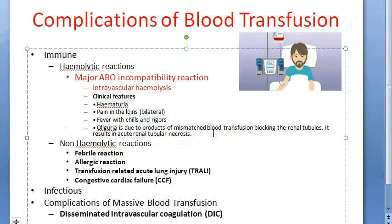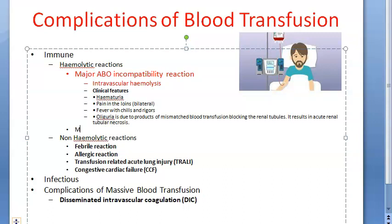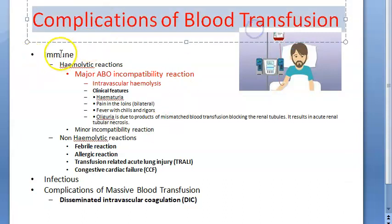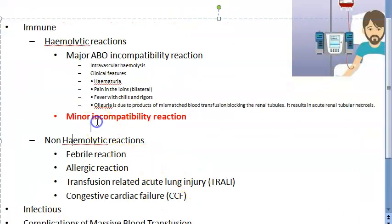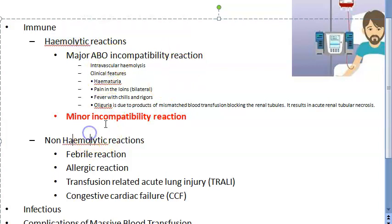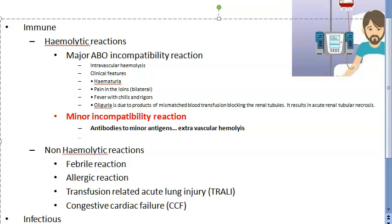Now let us talk about minor incompatibility reaction. This involves extravascular hemolysis and is a minor condition compared to the major one. It occurs due to antibodies to some minor antigens. These people will have malaise, jaundice - because it is hemolytic - and fever. Treatment is supportive only.